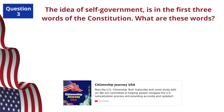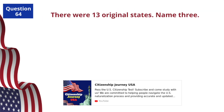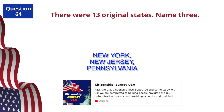The idea of self-government is in the first three words of the Constitution. What are these words? We the People. There were thirteen original states — name three: New York, New Jersey, and Pennsylvania.